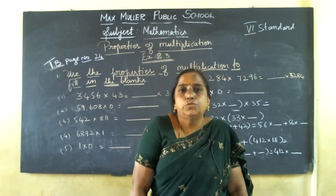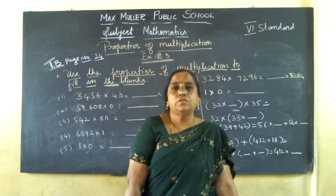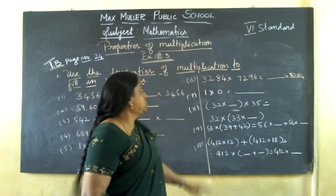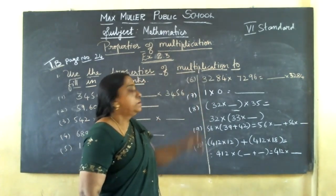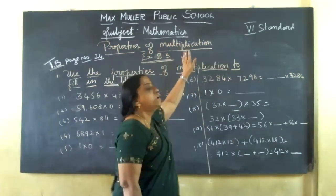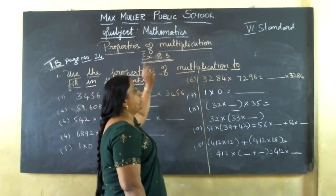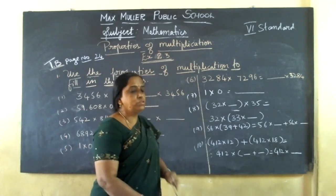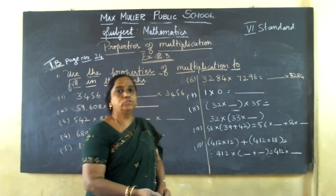Good morning, students. Today's class, I will go for properties of multiplication. Today's topic is properties of multiplication. Already additions or fractions are over. Today's topic is properties of multiplication. Based on that only, I will solve sums. Already you know properties of multiplication. Multiplication has closure property, commutative property, and associative property.